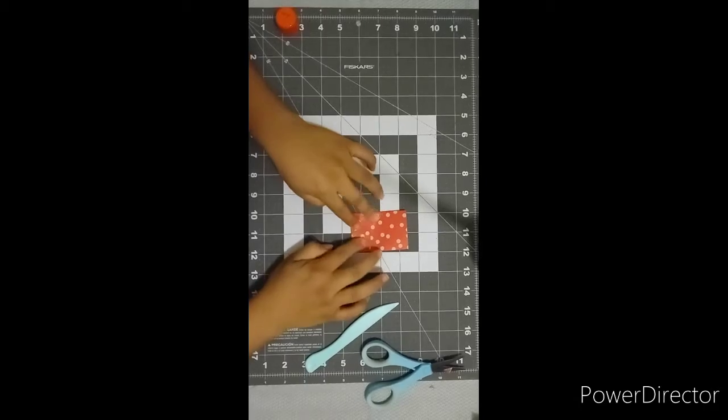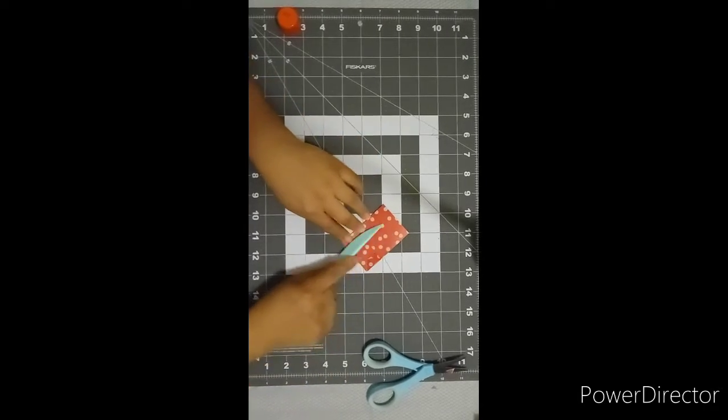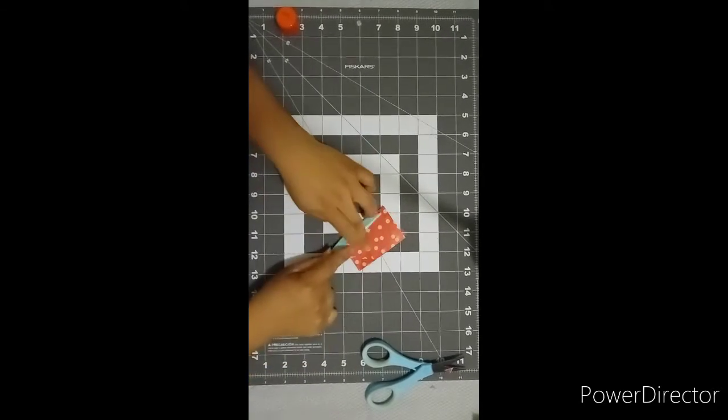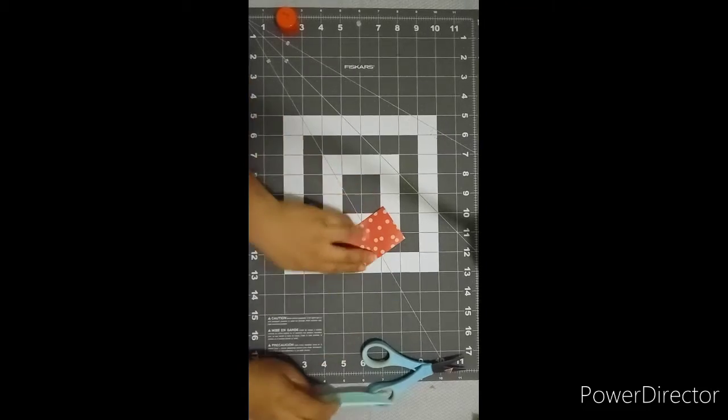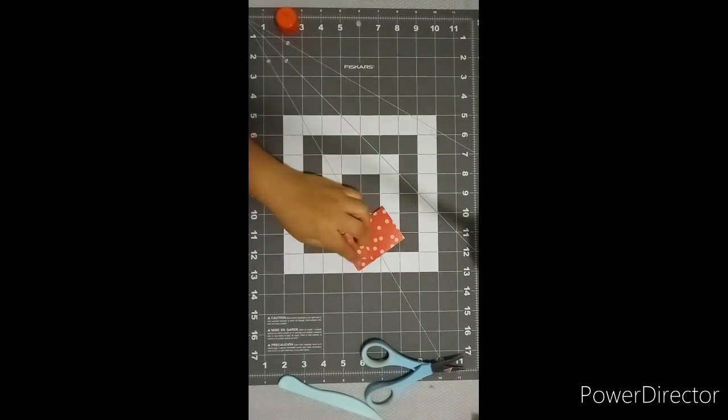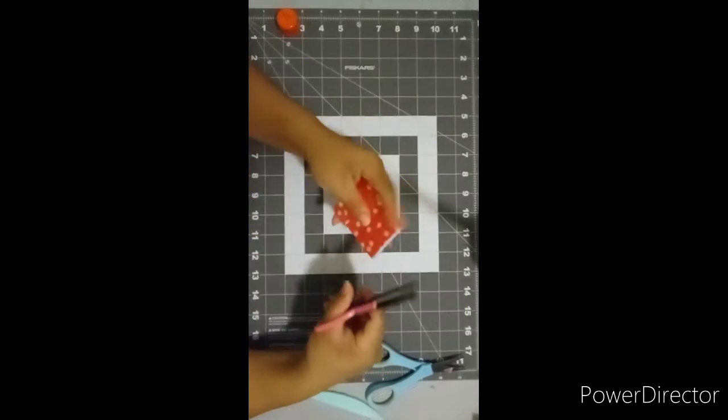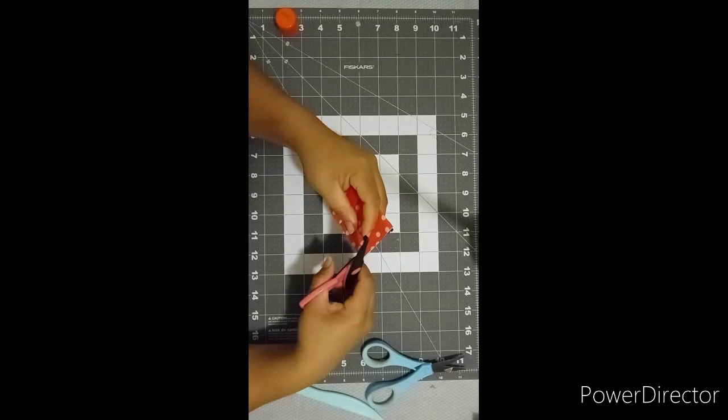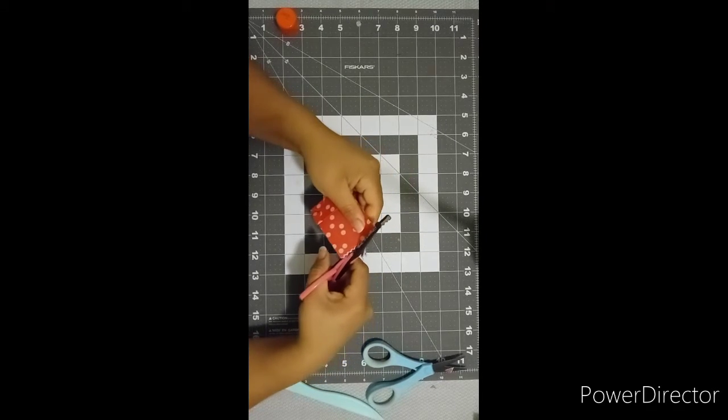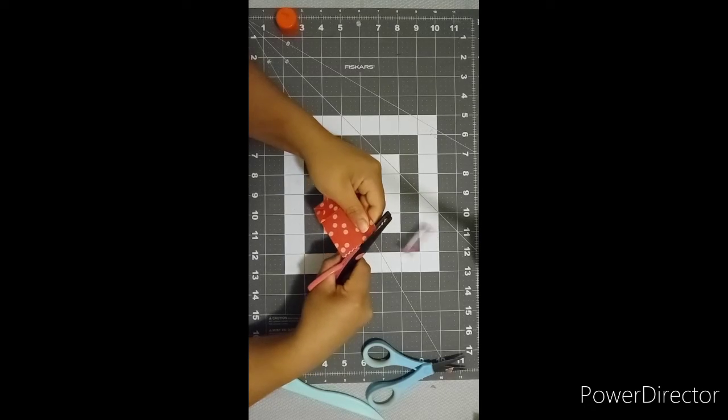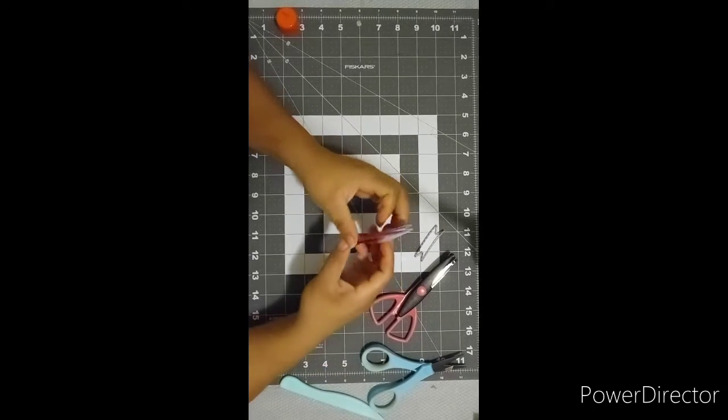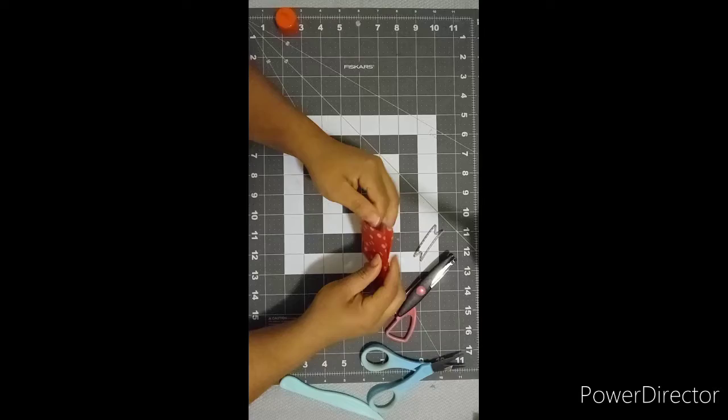And there it is. Help it a little bit with the bone folder. Okay, and now with the scissors, just trim up a little bit of the top part. It really gives it a nice look. There it is.